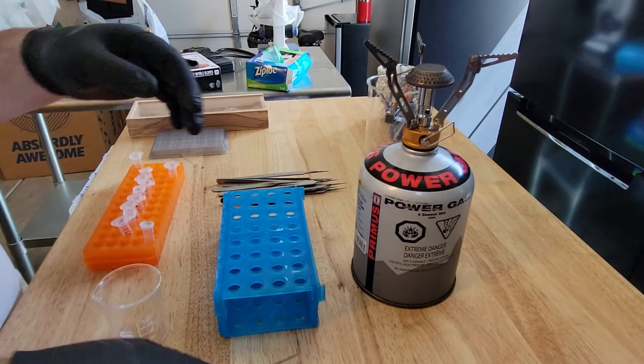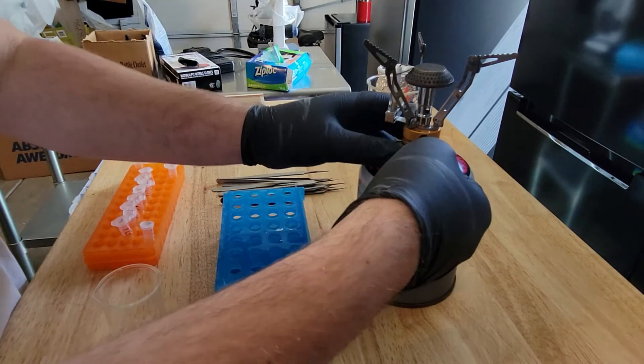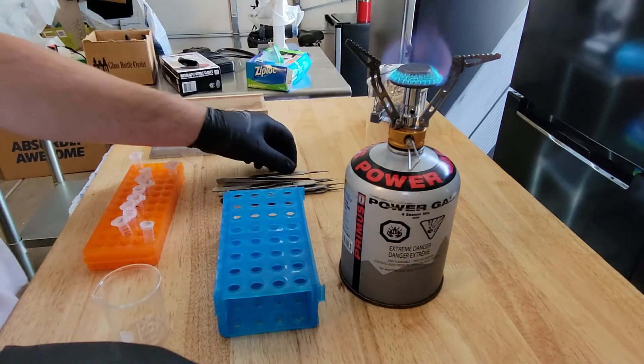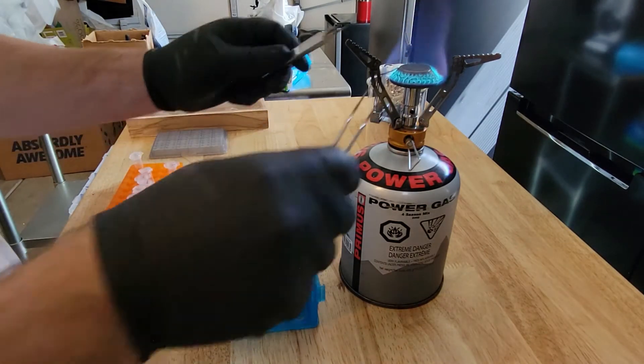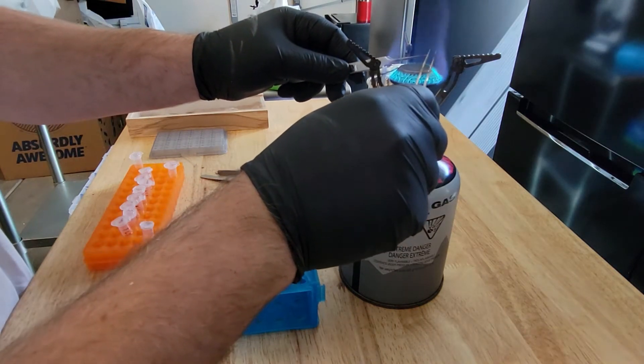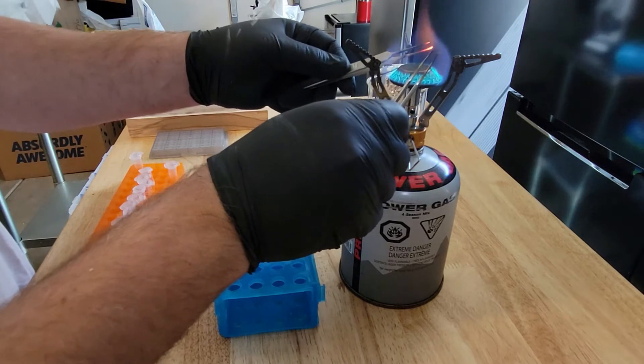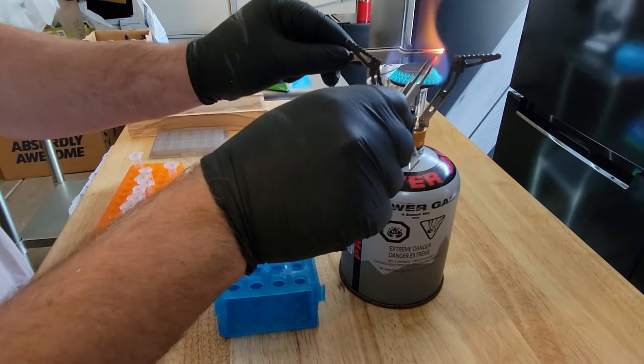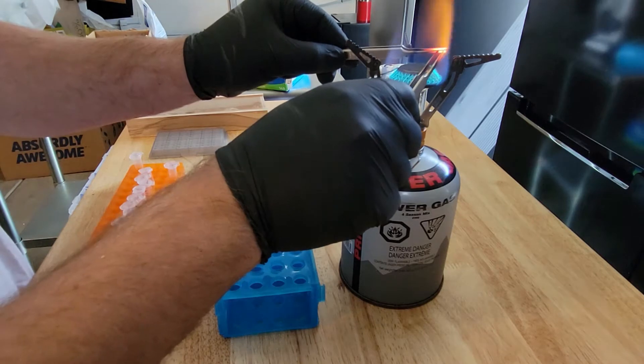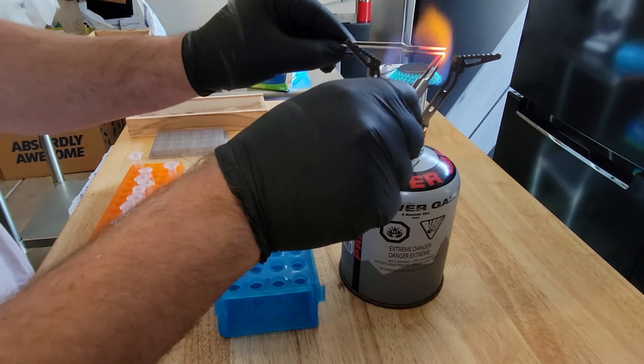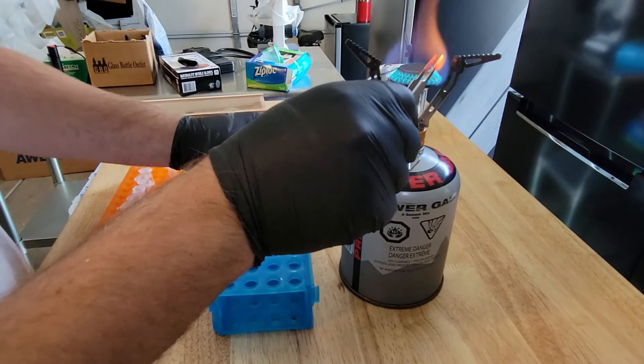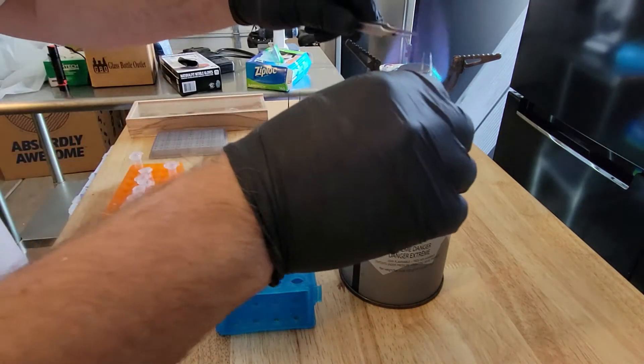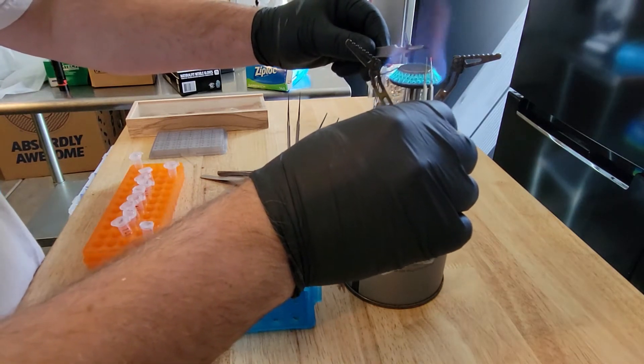The next step is we're going to decontaminate our tweezers. I'm going to use this simple camp stove, which I got for like $20. I'm going to burn these tweezers. This is less to sanitize them and more to actually remove any DNA residue. Once you get them red hot, you know that you've destroyed any DNA that's on there. I'll carefully place them in this little holder. I'm going to be extremely careful not to touch them. They're going to stay hot for a long time.